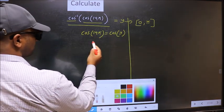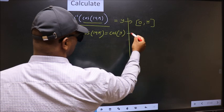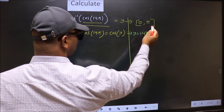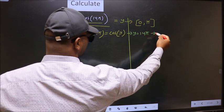Now comparing both sides, we get y to be 14 pi. Does this lie in this interval? No. So reject this answer.